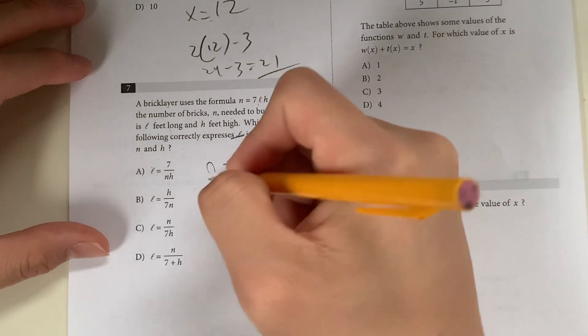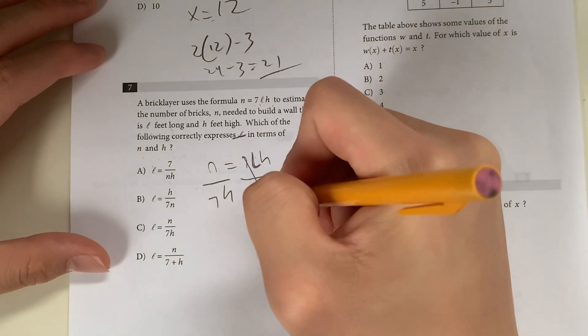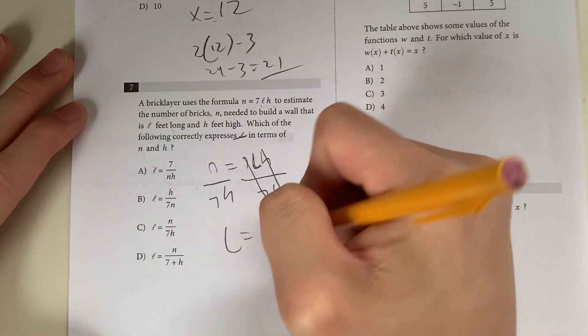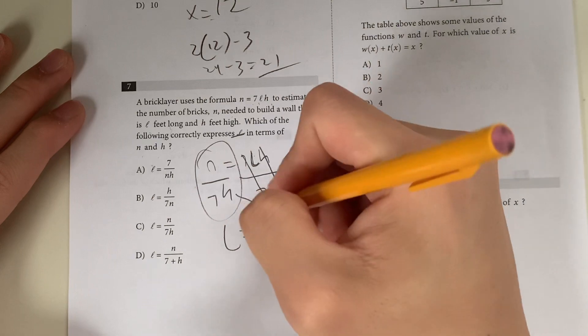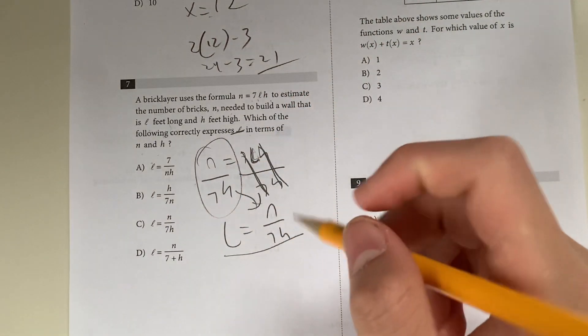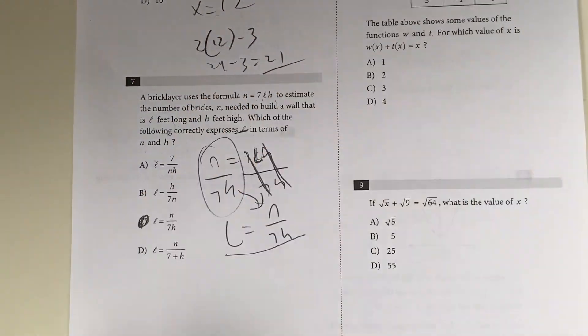What I'll do, divide both sides by 7H. If you do that, 7s cancel out, Hs cancel out, just giving you L equals N over 7H. You just have L, so L equals N over 7H, meaning your answer should be C.